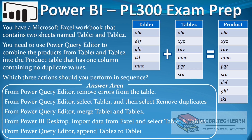The question is: you have a Microsoft Excel workbook that contains two sheets named table 1 and table 2. You need to use Power Query Editor to combine the products from table 1 and table 2 into the product table that has one column containing no duplicate values. Which three actions should you perform in sequence?